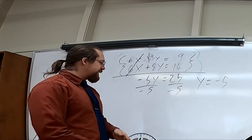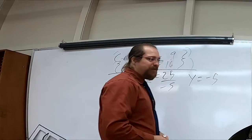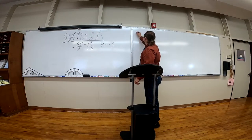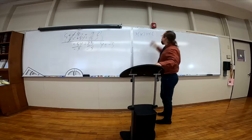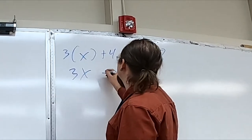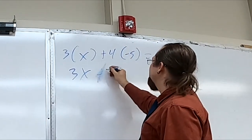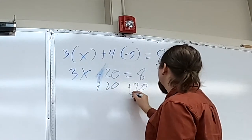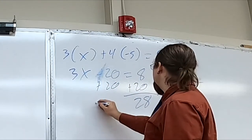Okay so once I know what y is I can plug that into one of the two equations. Let's go back to this one. I had 3 times x plus 4 times y equals 8. So now I can go ahead and multiply it through. 3x minus 20 equals 8. I'm gonna add 20 to both sides. This is giving me 28. That can't be right, can it?